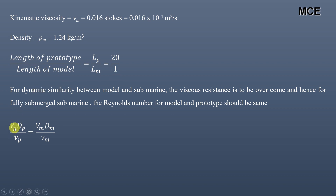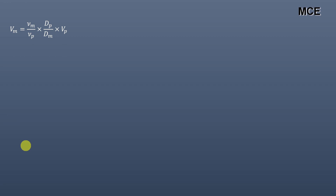The Reynolds number is given as velocity times diameter divided by kinematic viscosity. Setting Reynolds number for prototype equal to that for the model: Vp × Dp / νp = Vm × Dm / νm. Solving for the velocity of the model in air: Vm = (νm / νp) × (Dp / Dm) × Vp.